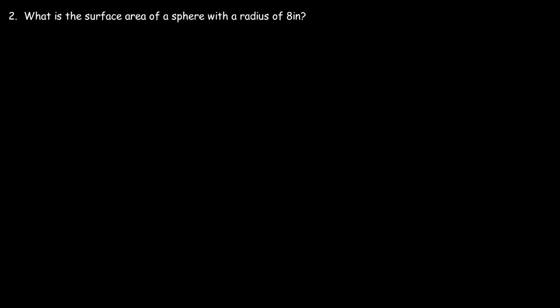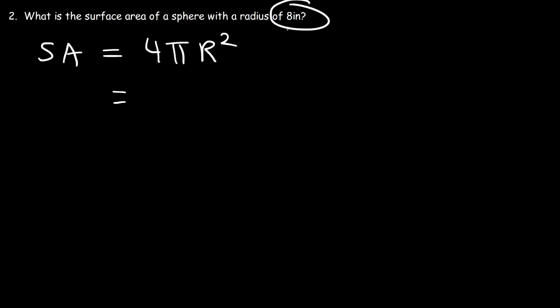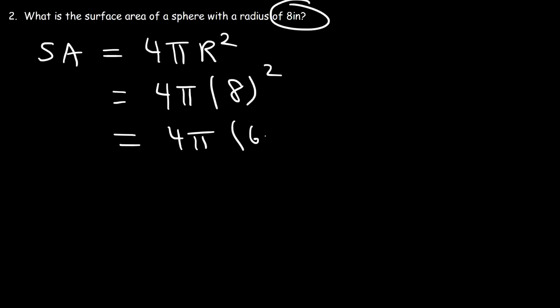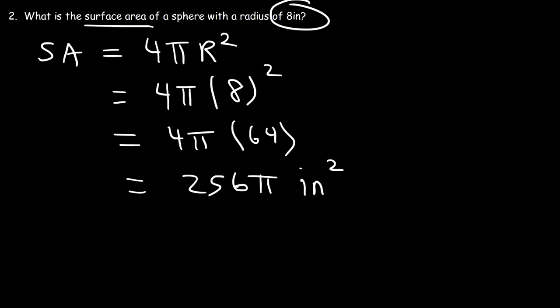Number 2: What is the surface area of a sphere with a radius of 8 inches? Let's begin by writing the formula first. The surface area is 4 pi times r squared. And we already have the value of r — it's 8 inches. So it's 4 pi times 8 squared. 8 squared, or 8 times 8, is 64. And if you multiply 64 by 4, that gives you 256. So the answer is 256 pi square inches.